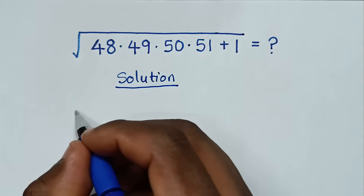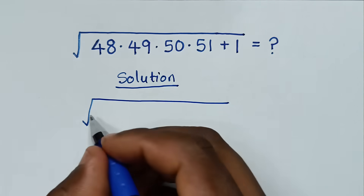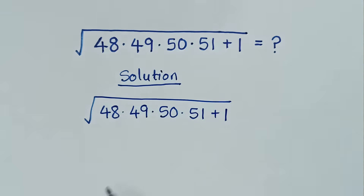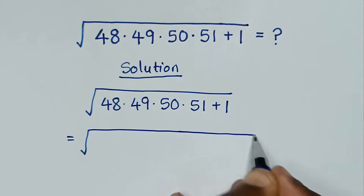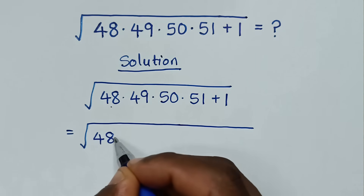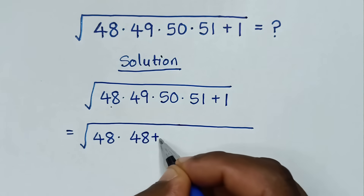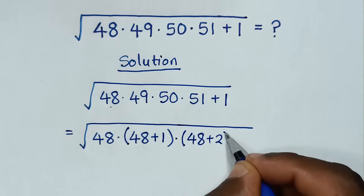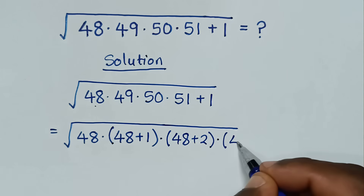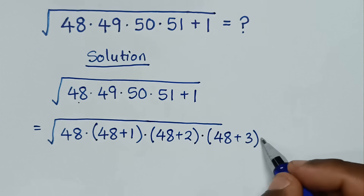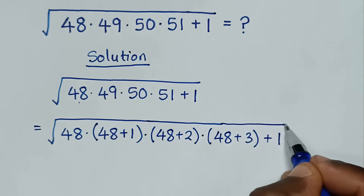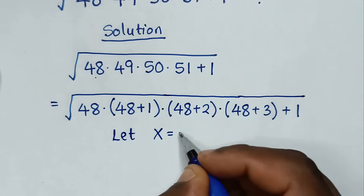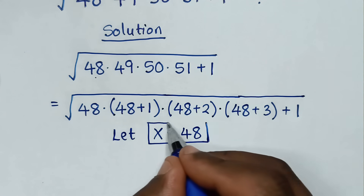This is the first solution. From the problem, square root of 48 times 49 times 50 times 51 plus 1. We make 48 common, so it will be 48 times (48+1) times (48+2) times (48+3) plus 1. Now, 48 is common, so we let x equal to 48.